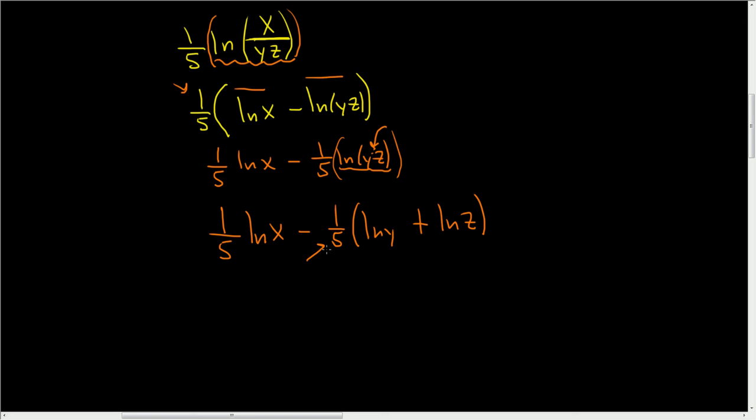To finish, we'll just distribute this and we're done. So this is one over five natural log of x minus one over five natural log of y minus one over five natural log of z. And that is the answer.